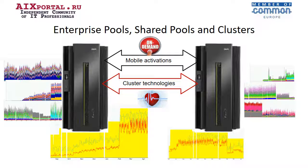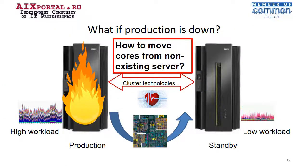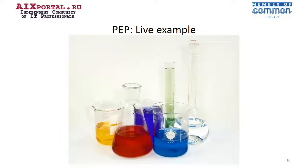The time of this presentation is limited, so I will not show you how to set up Power Enterprise Pool — I will show you just one more example. I've heard this question many times: yes, it's understandable how to move activations between systems, but what if the first system is gone? For example, in case of some disaster. Can we move activations from a system that no longer exists? Is it possible? Yes.